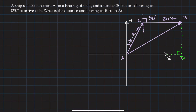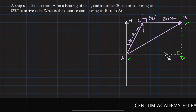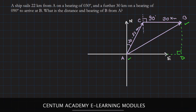Hello friends, let's take up a question on bearings. In this question, it's given that a ship sails 22 kilometers from a point A on a bearing of 030, and a further 30 kilometers on a bearing of 090 to arrive at B. You can see the positions: here is A, here is B, and here is C. AC is 22 kilometers, bearing is 30 degrees.